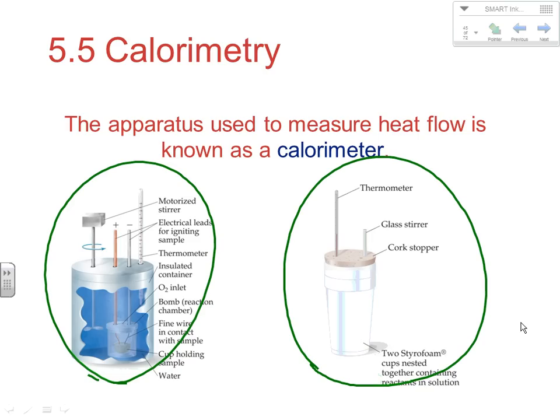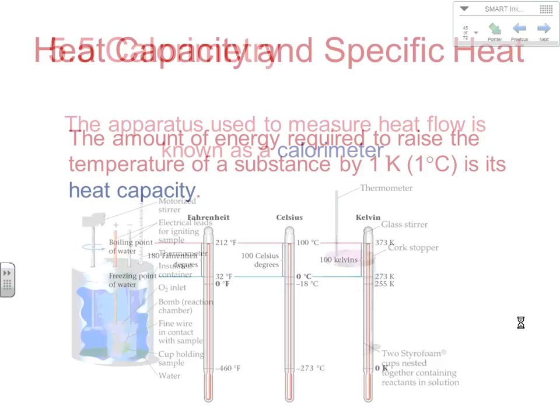You basically have a well-insulated device where a reaction can take place, and you have a thermometer in there so you can track changes in temperature. We usually nest two styrofoam cups to make a better insulated container, then put some type of topping on to help make sure that heat doesn't flow in and out of the system. It's not perfect, but for the type of calorimetry we're looking at, a simple coffee cup calorimeter works well to study heat flows.